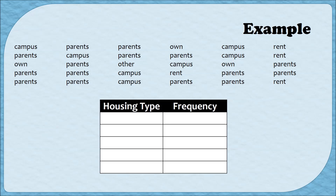You'll notice that I have two columns — one for the housing type and one for the frequency. Whatever kind of data you've collected goes into that first column. In this case we asked students what type of housing they have, so our first column is housing type. The second column is always going to be frequency. My table has five rows because there were five different types of housing.